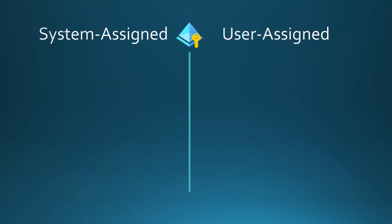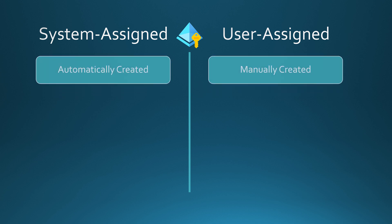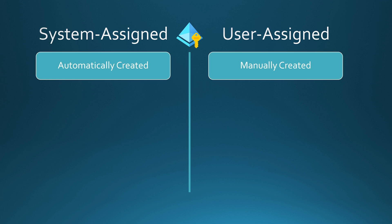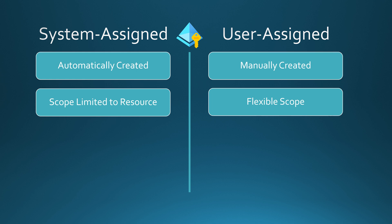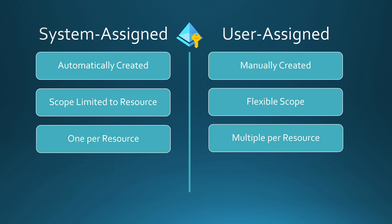Now you have seen in the Azure portal how to use user assigned managed identity and how to grant accesses with it. Let's compare these identities side by side to highlight the key differences. The first key difference is that the system assigned managed identity is automatically created by Azure — you just have to enable it, or in some cases it is already enabled by default. For user assigned managed identity, you have to manually create the resource and then manually assign it to the resources you want to use it for. The second key difference is scope: system assigned is limited to the resource, while user assigned has a flexible scope. The third key difference is that there can only be one system assigned managed identity per resource, whereas there can be multiple user assigned managed identities per resource.